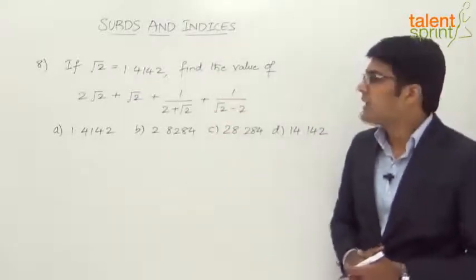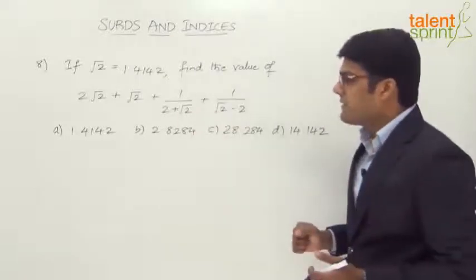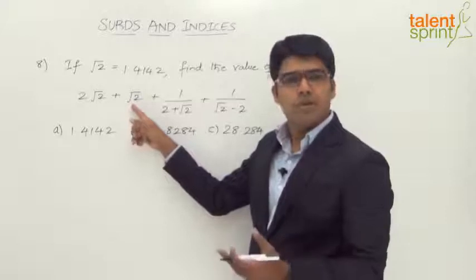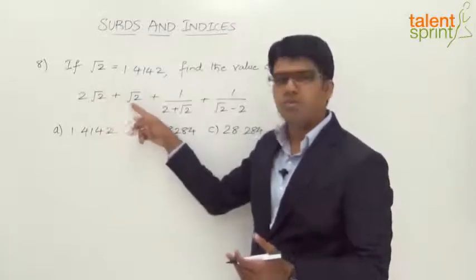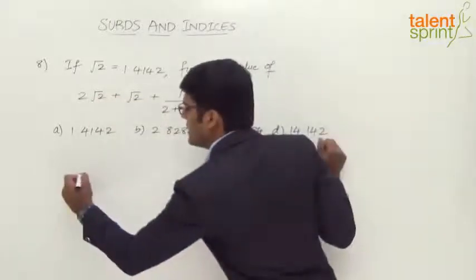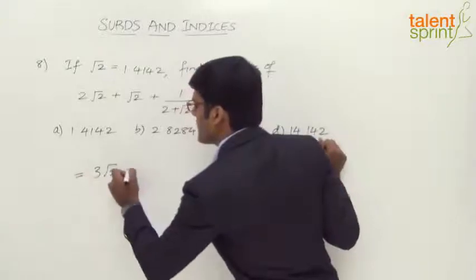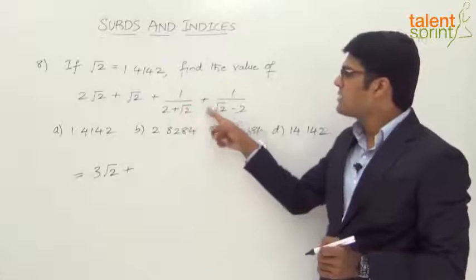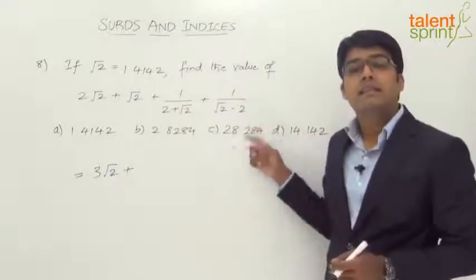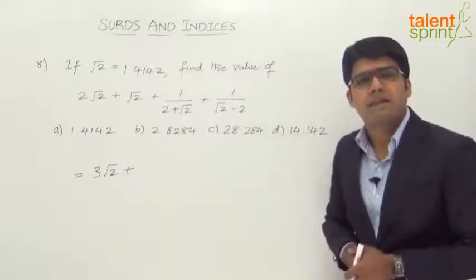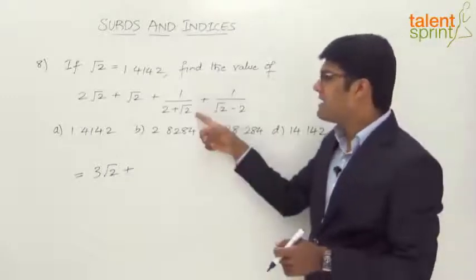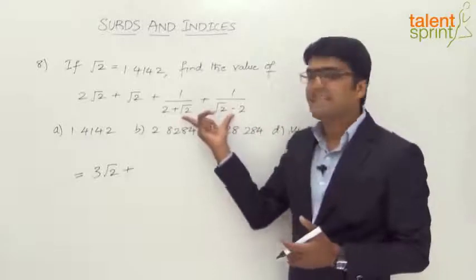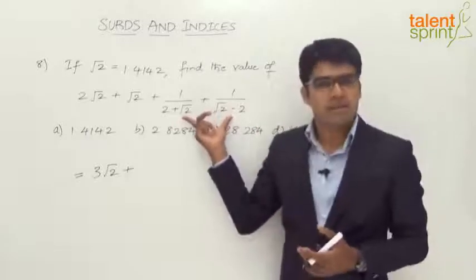Now let's simplify the given expression. 2√2 + √2 is already equal to 3√2. So we have 3√2 plus two more terms: 1/(2 + √2) + 1/(√2 − 2). There are different ways of simplifying these radical terms — we can rationalize each term, or simply take the LCM of the denominators to get the resultant fraction.